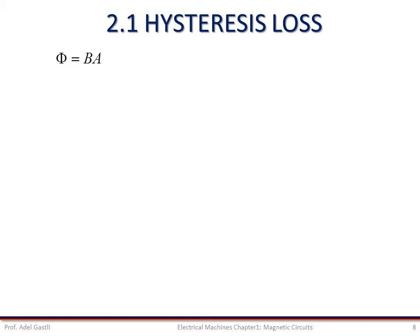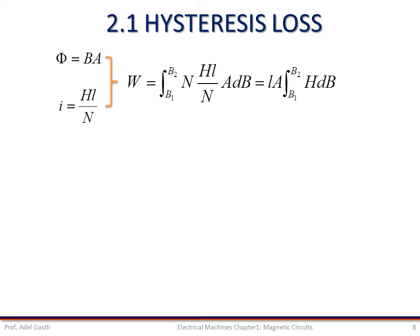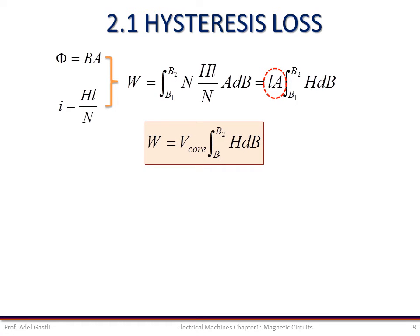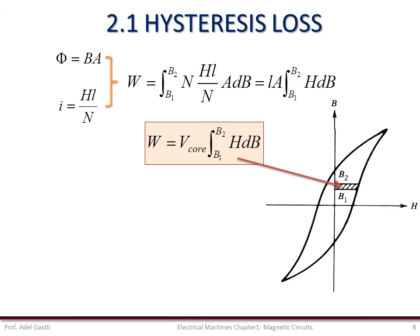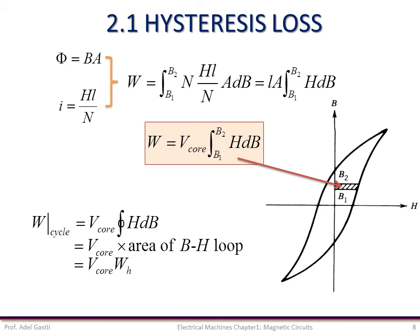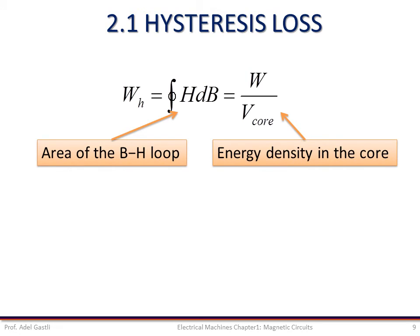Considering that the flux is the product of the flux density B and the core cross-section area, and considering that according to Ampere's law the current is HL divided by N, we can rewrite the energy transfer expression accordingly. Considering that the core length L multiplied by cross-section area A is actually the volume of the core, the integral term in this equation represents the hatched area of the hysteresis loop. The total energy transfer over one cycle is the product of the volume of the core by the area of the BH curve, denoted WH. Therefore, the area of the hysteresis loop is equal to the energy density in the volume.